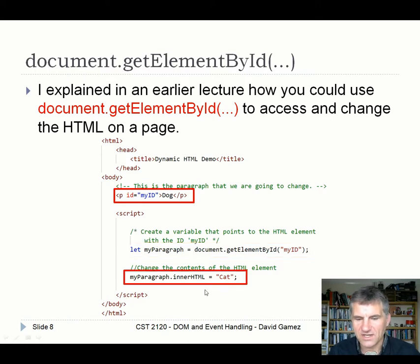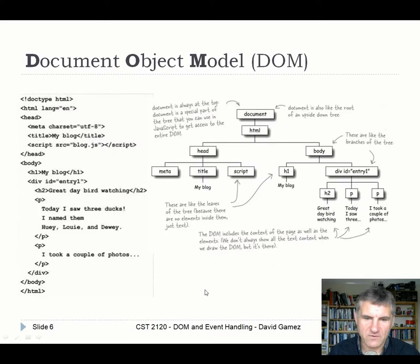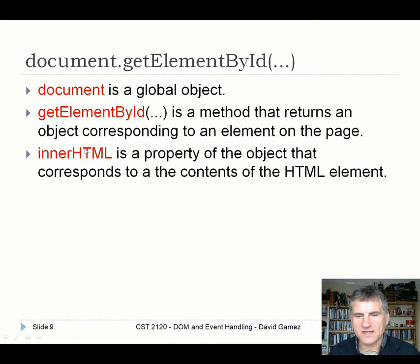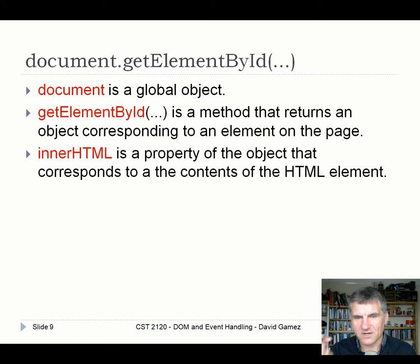In this case we're changing the innerHTML. If we were changing the title, for example, the innerHTML of the title would change the text 'my blog' to something else. So: document is a global object we can access anywhere in our JavaScript code; getElementById is a method of this object; and innerHTML is a property of the object that corresponds to the contents of the HTML element between those two tags.